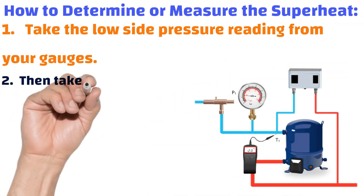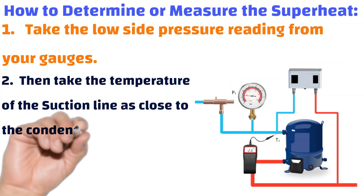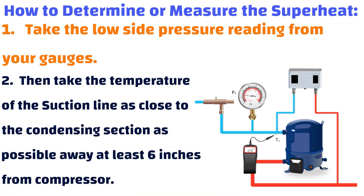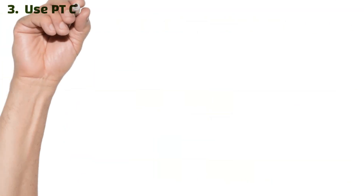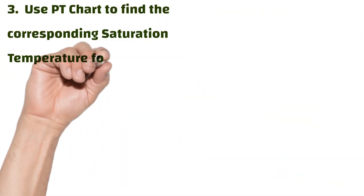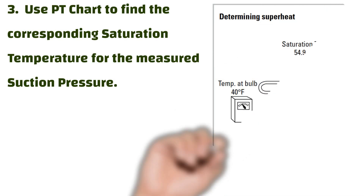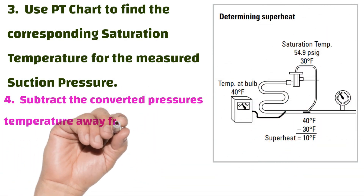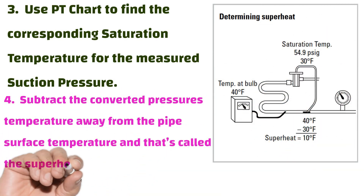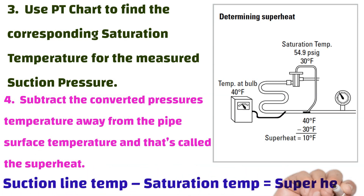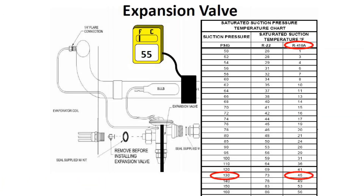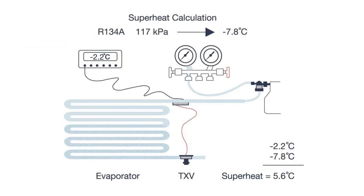How to determine or measure superheat — steps: one, take the low side pressure reading from your gauges; two, take the temperature of the suction line as close to the condensing section as possible, at least six inches away from the compressor; three, use a PT chart to find the corresponding saturation temperature for the measured suction pressure; four, subtract the converted temperature from the pipe surface temperature — that is the superheat. Suction line temperature minus saturation temperature equals superheat.